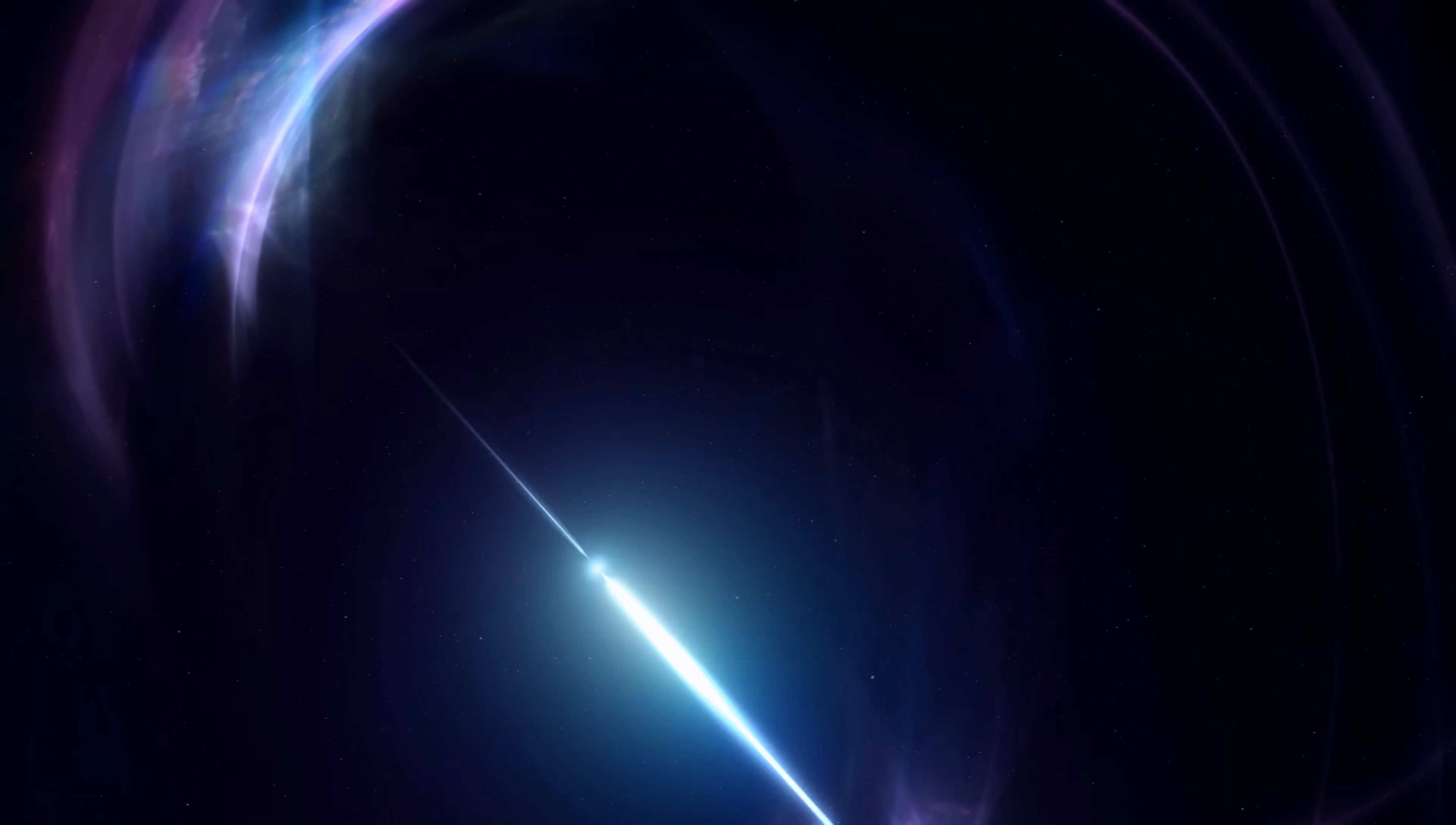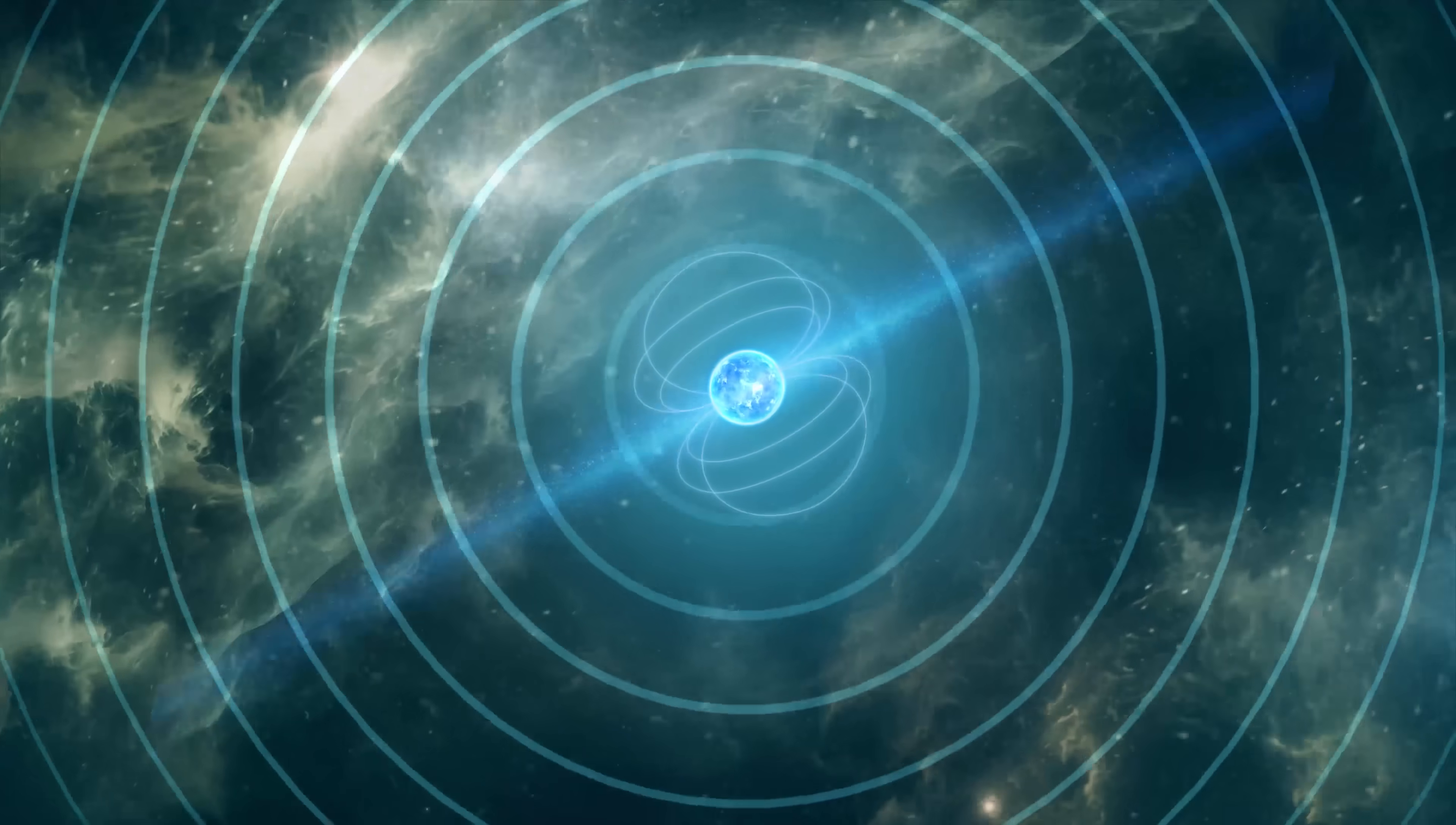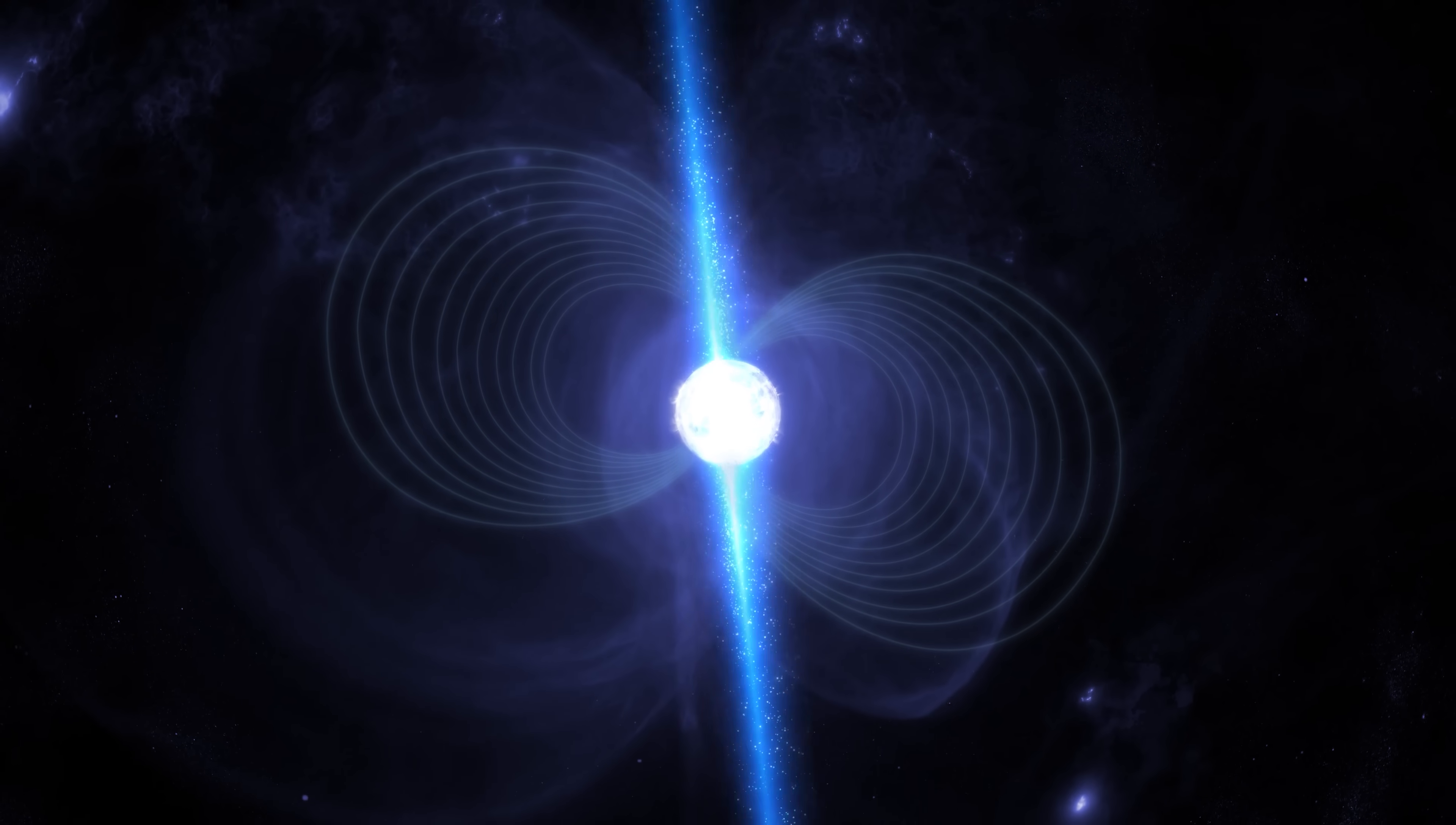Unlike typical pulsar signals, which have a constant shape and amplitude, GPM J1839-10 exhibits features that set it apart. Its waveform does not follow the profiles we usually associate with pulsars, and its amplitude exhibits variations that have yet to be explained.